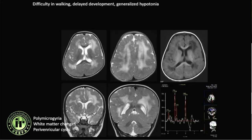Another patient presents with difficulty in walking, delayed development, and generalized hypotonia. The MRI shows polymicrogyria, diffuse white matter abnormalities, and periventricular cysts. This was Zellweger syndrome, associated with malformations of cortical development.